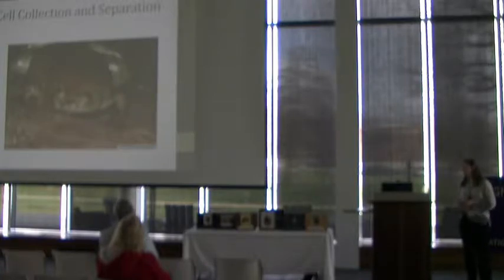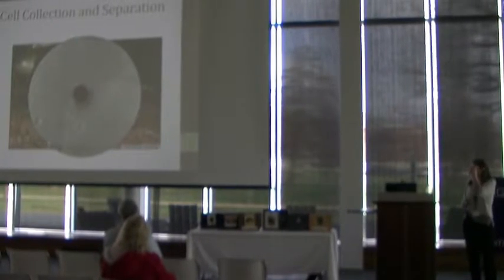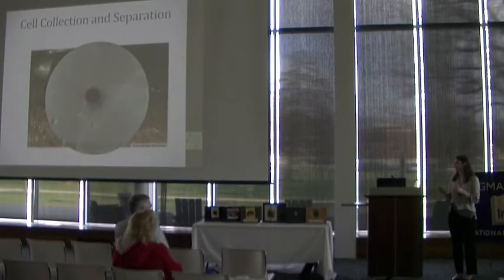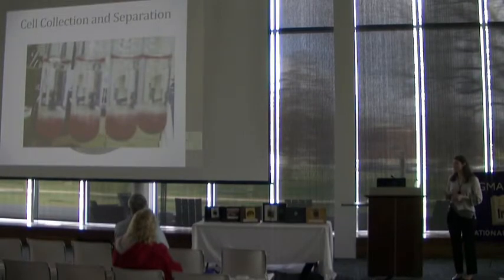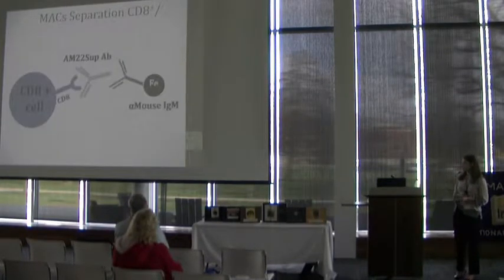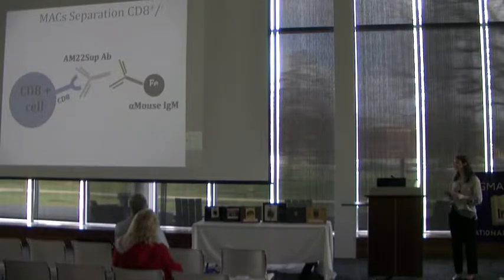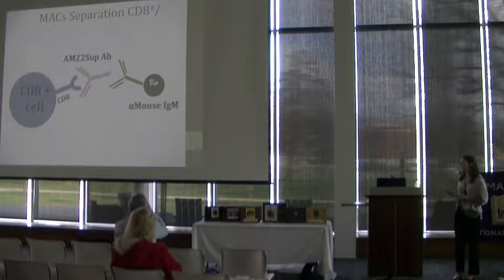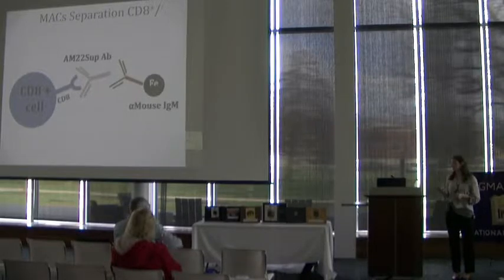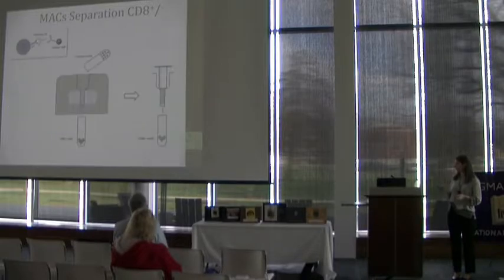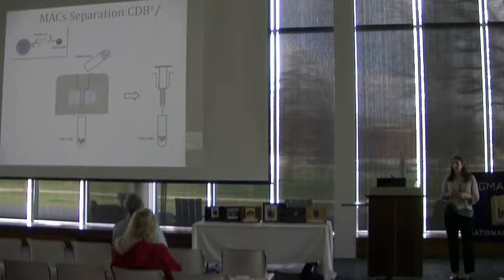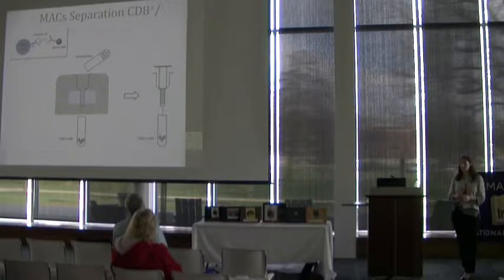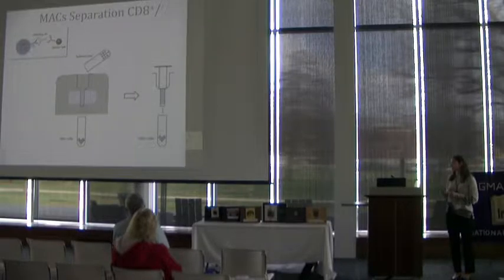To obtain our cells, we first euthanize an adult Xenopus laevis and extract the spleen. We homogenize the spleen to release the cells and separate them on a density gradient, where lymphocytes form the buffy coat region suspended in the gradient and red blood cells sink to the bottom. We then separate cells based on the presence of the CD8 co-receptor by incubating all lymphocytes with AM22, an anti-CD8 antibody, then with anti-mouse IgM conjugated to an iron bead, forming a complex between the magnetic bead and CD8-positive cells. Cells are poured through a magnetic column to separate CD8-negative cells, then the column is removed from the magnet and CD8-positive cells are eluted.